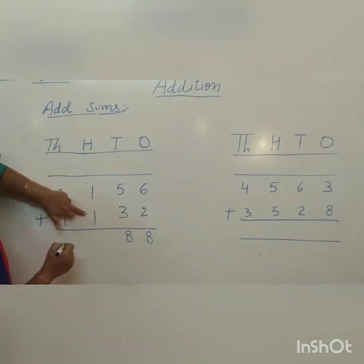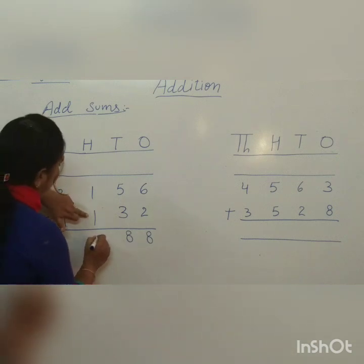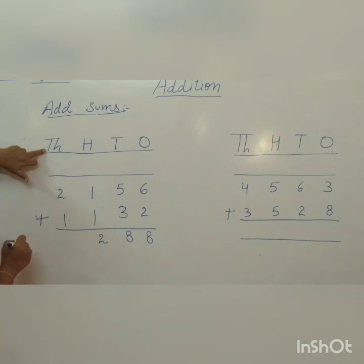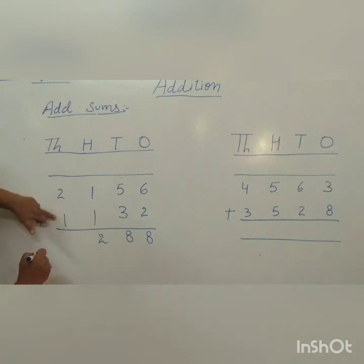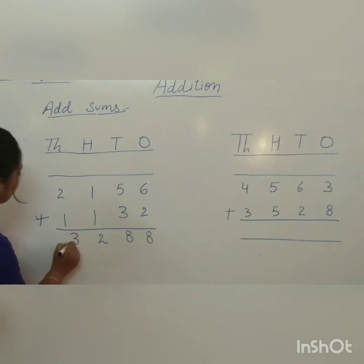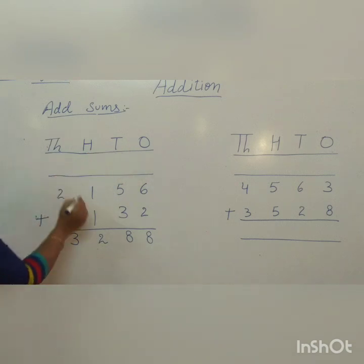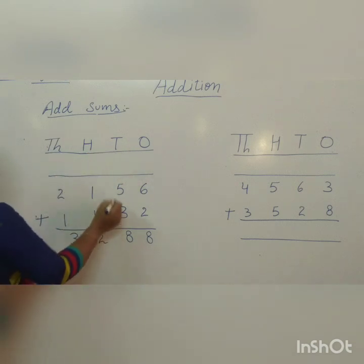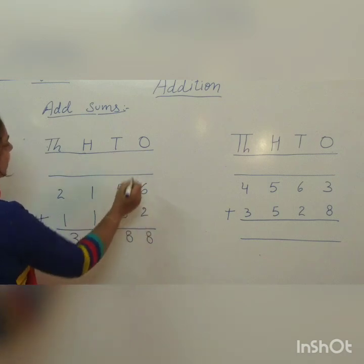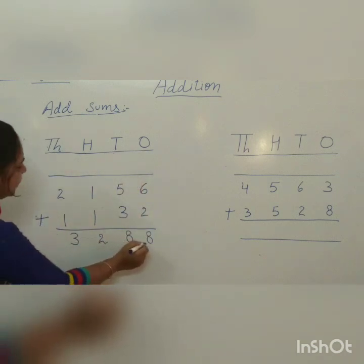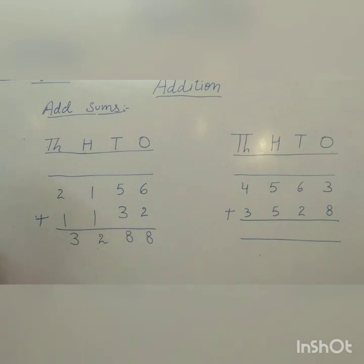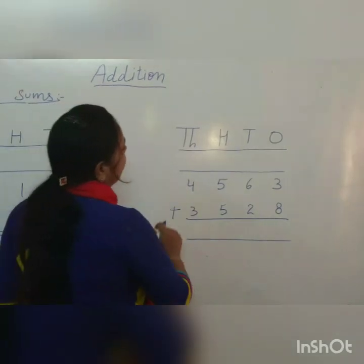Now come to the hundreds place. 1 plus 1 equals 2. Now come to the thousands place. 2 plus 1 is 3. So 2 thousands, 1 hundred, 5 tens, 6 ones plus 1 thousand, 1 hundred, 3 tens, 2 ones becomes the number 3,288.